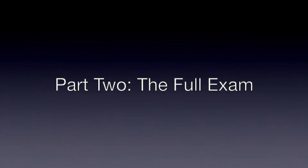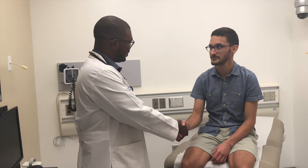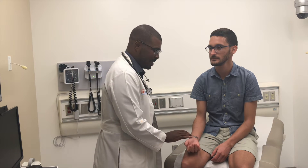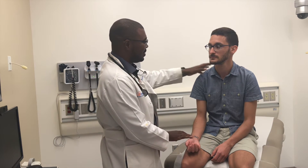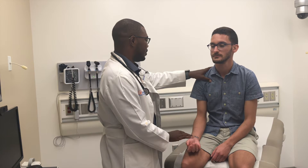In part two, we're going to show you what it looks like when you put together everything from part one and do a single fluid exam. The examiner begins by introducing himself and conducting a general assessment of the patient's appearance and demeanor — you can often do this while making light conversation. Once done, he moves on to assessing the patient's heart rate. Notice that he also puts his hand in position for checking the respiratory rate.